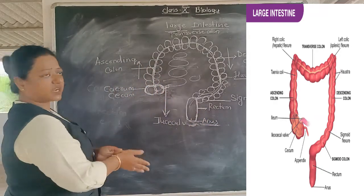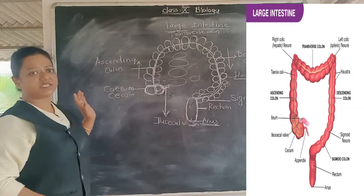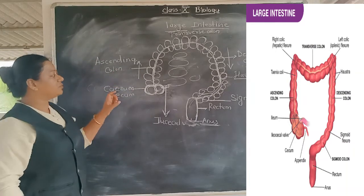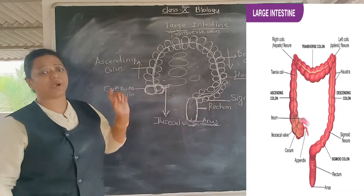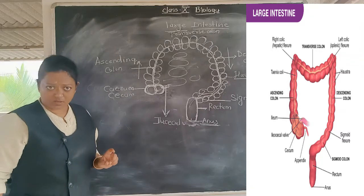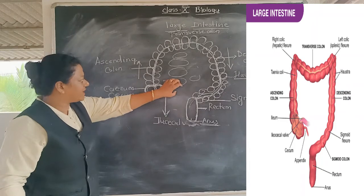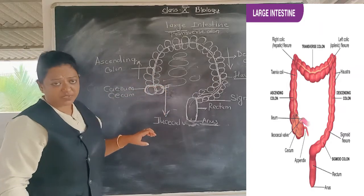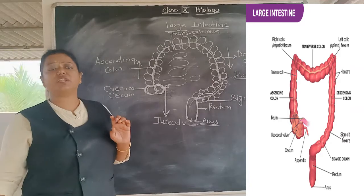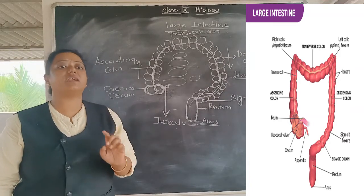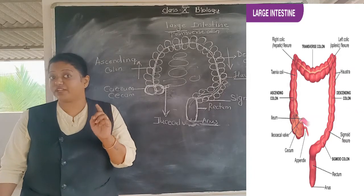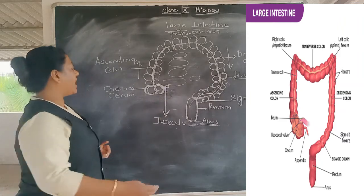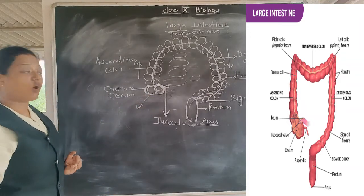So those are the structures and parts of the large intestine. Now let's talk about what functions are actually taking place here. The undigested particles move from one part to the other, but what exactly is happening? When undigested particles enter from the ileum through the ileocecal valve into the cecum, at that point it contains approximately 1.5 to 2 kg of undigested food particles.